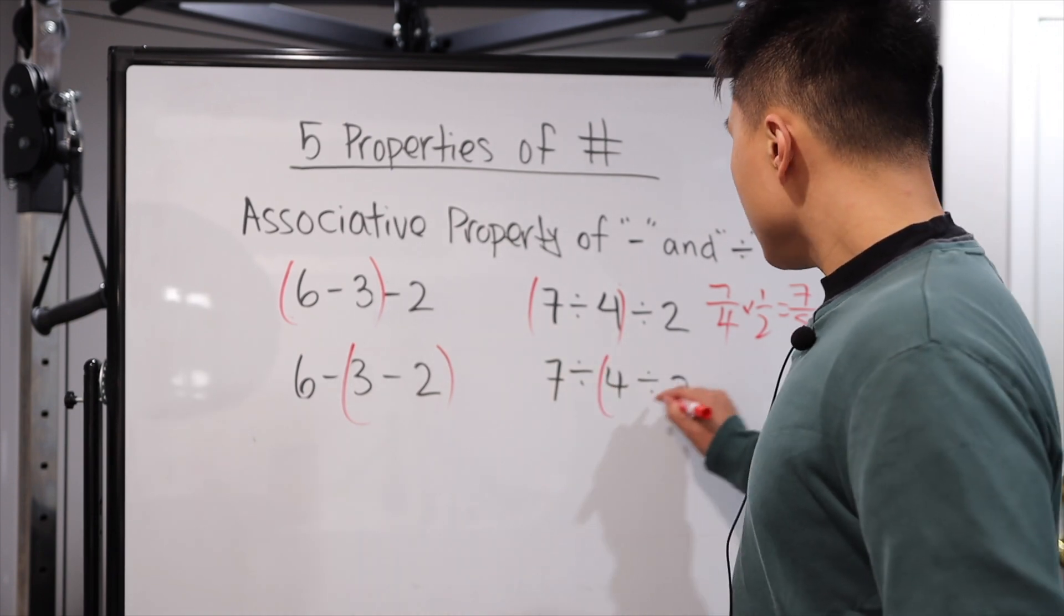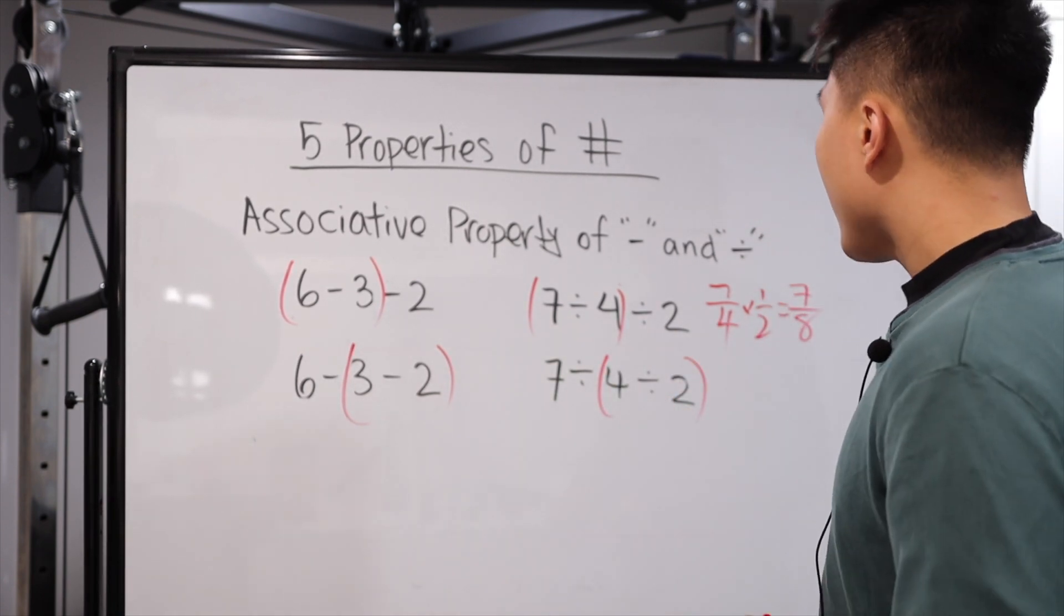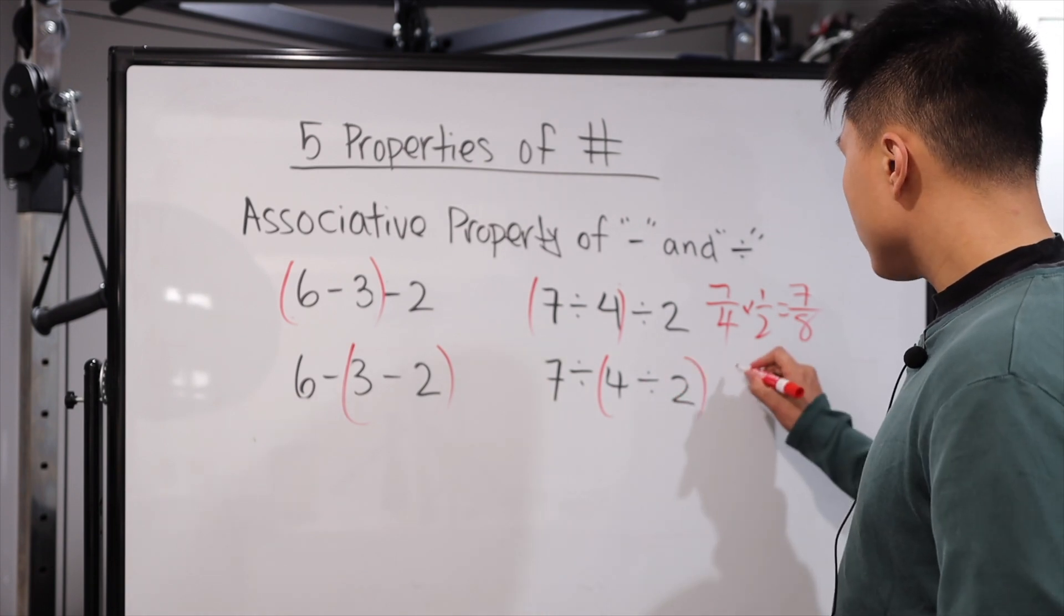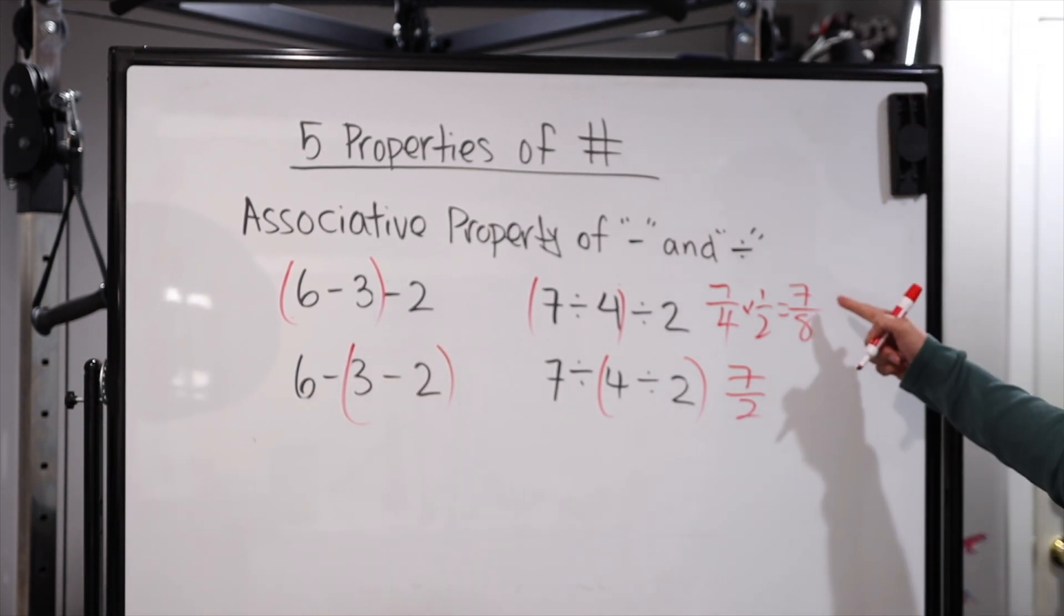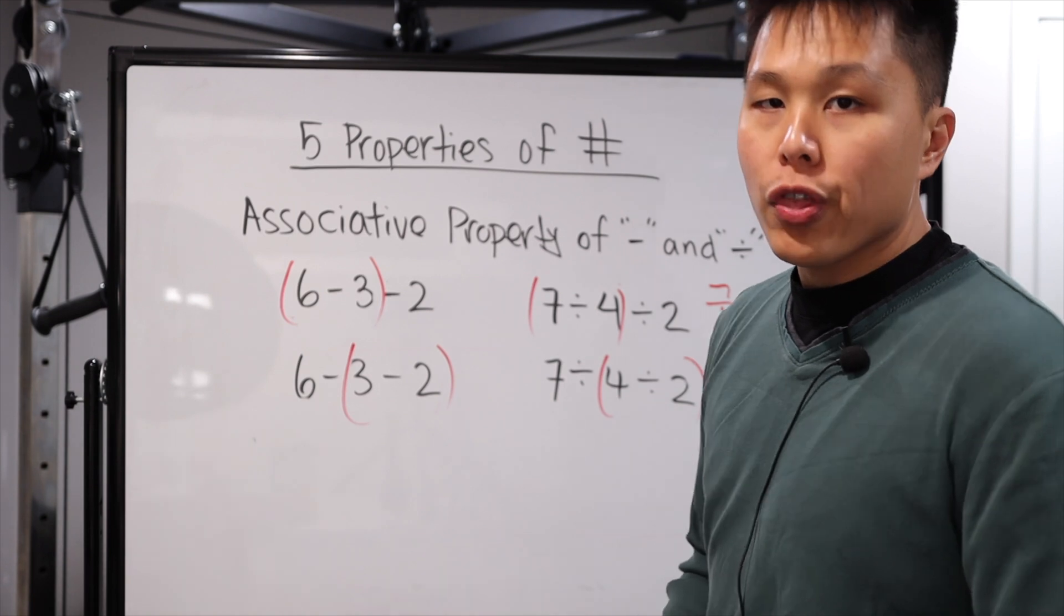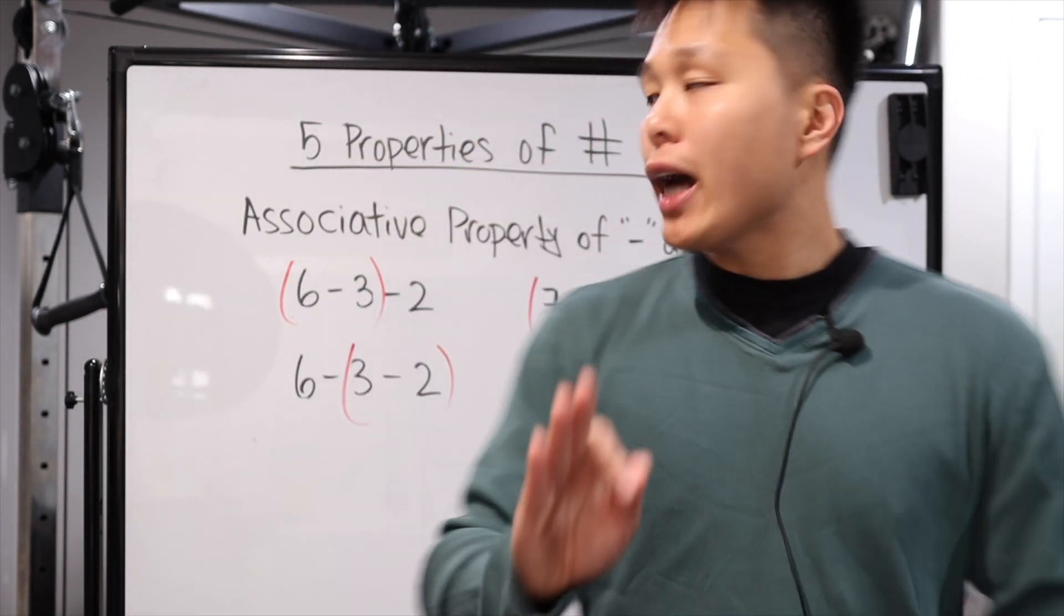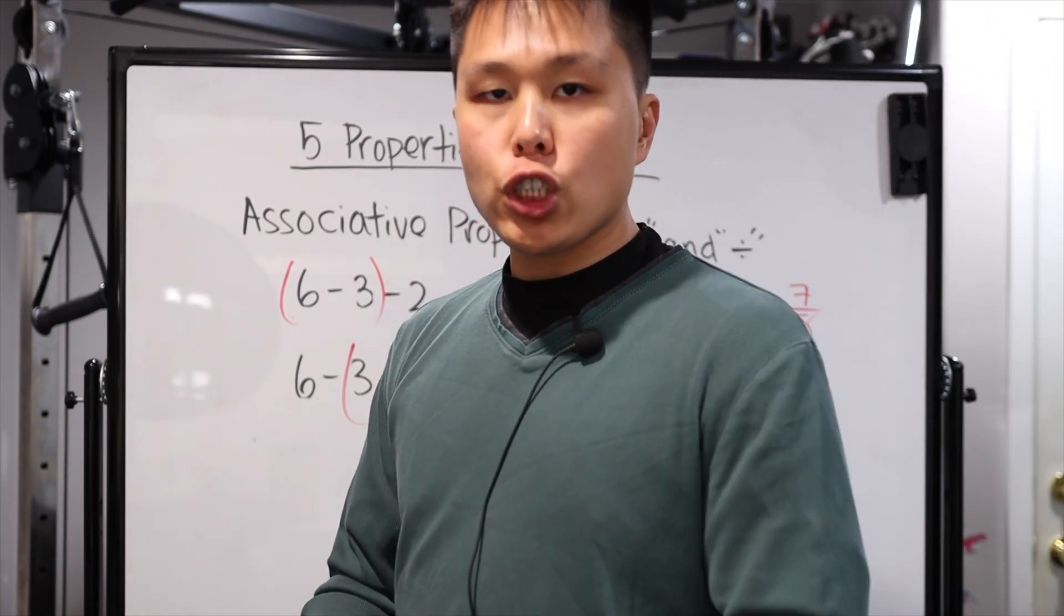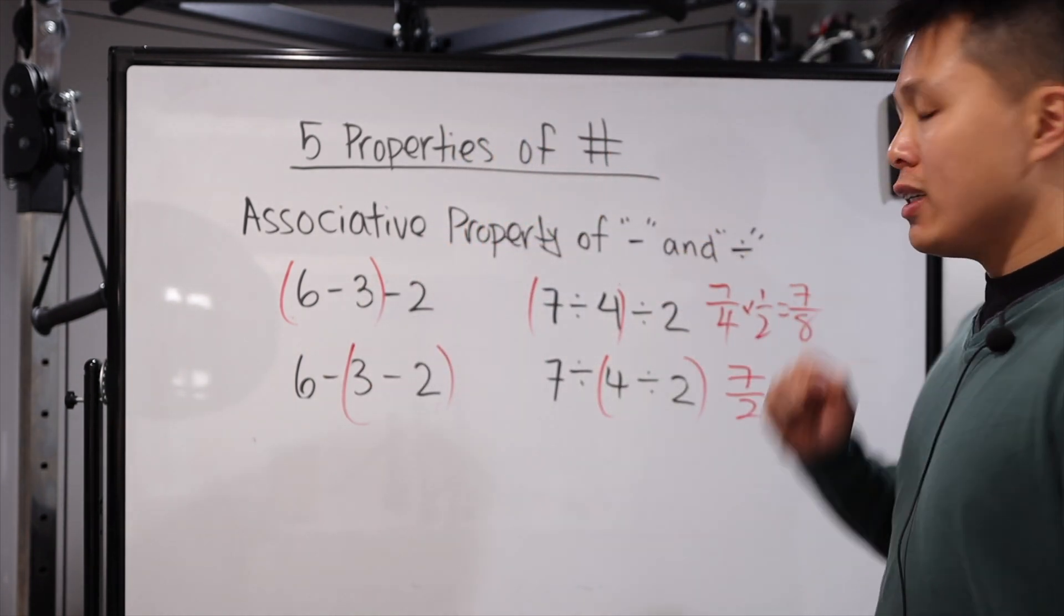If we change the order in how we divide it, seven divided by, well, this one's four divided by two, which is going to be two. So all of a sudden it's going to be seven divided by two. Notice that there are two different things. You have a seven divided by eight on top and a seven divided by two on the bottom, two different numbers. Please, please, please do not assume that because associative property works for addition and multiplication, that they will immediately work for subtraction and division as well.